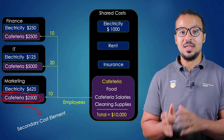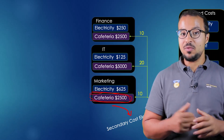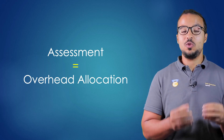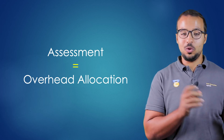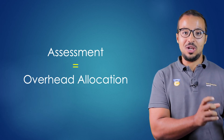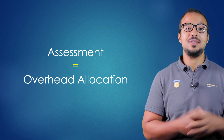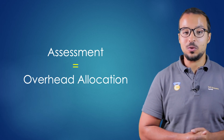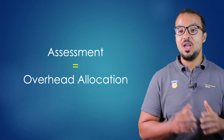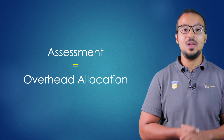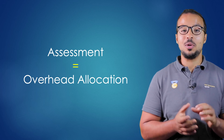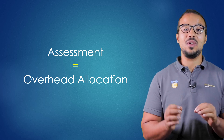Note that in SAP ECC and even early versions of SAP S/4HANA, this method was called 'assessment' when using only one cost element to move costs to the receiving cost center. However, in SAP S/4HANA 2022 and 2023, if you check the SAP Help Library, it is no longer called assessment but is now called overhead allocation. These are the basics needed to create cost allocation cycles.